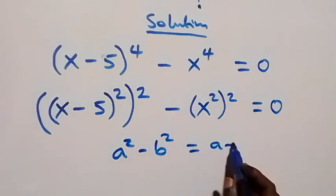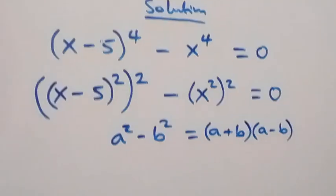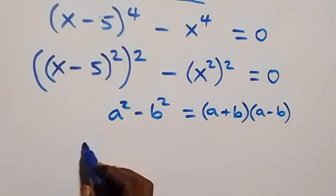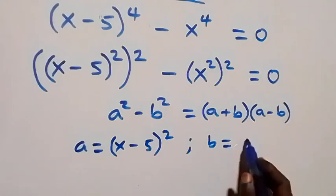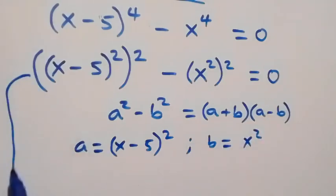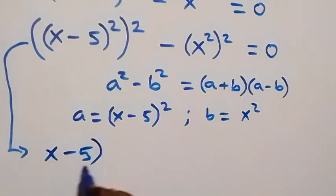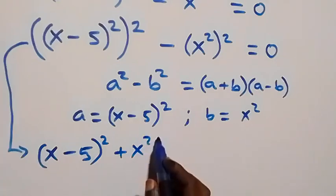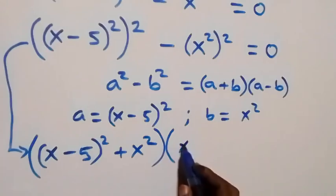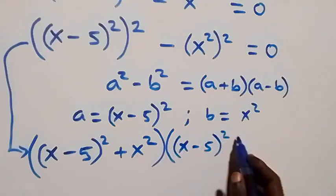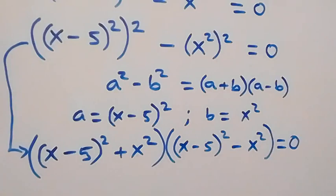The difference of two squares: a squared minus b squared equals a plus b multiplied by a minus b. Here, a is standing as (x minus 5) squared and b is standing as x squared. So this equation becomes: (x minus 5) squared plus x squared, times (x minus 5) squared minus x squared, equals to 0.